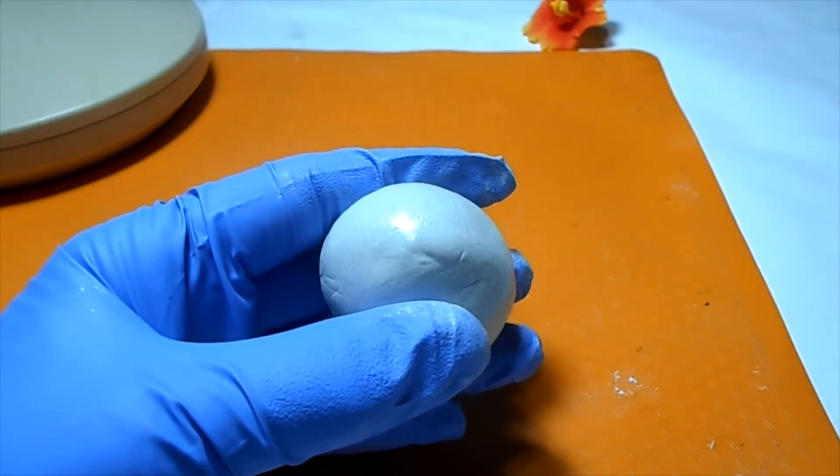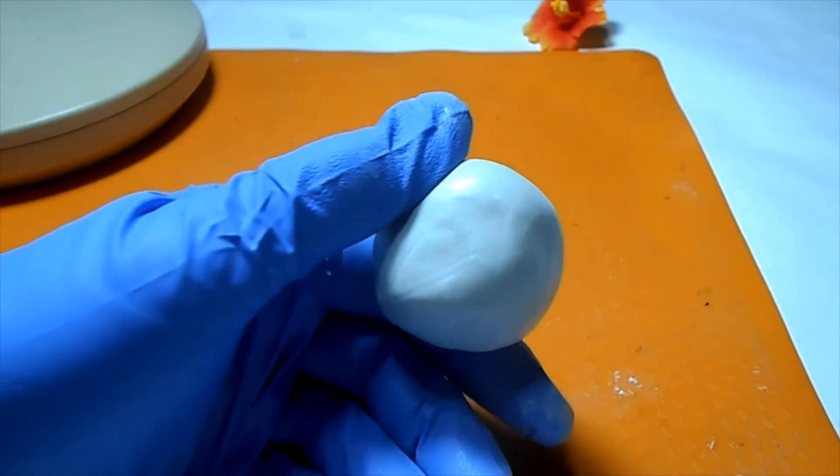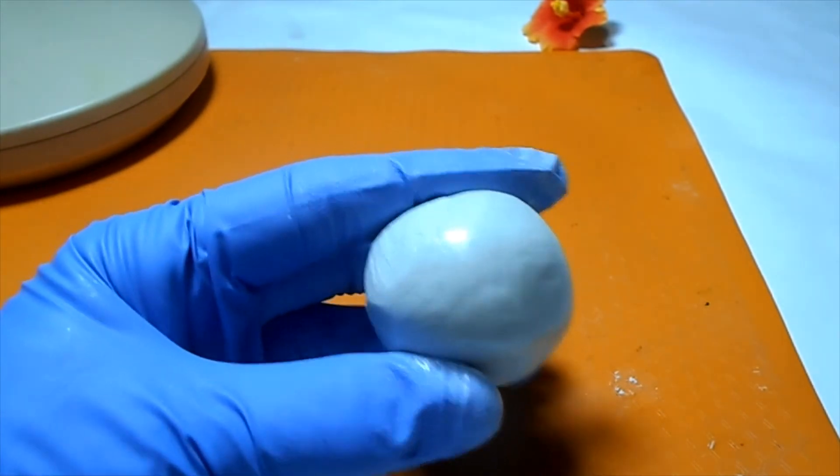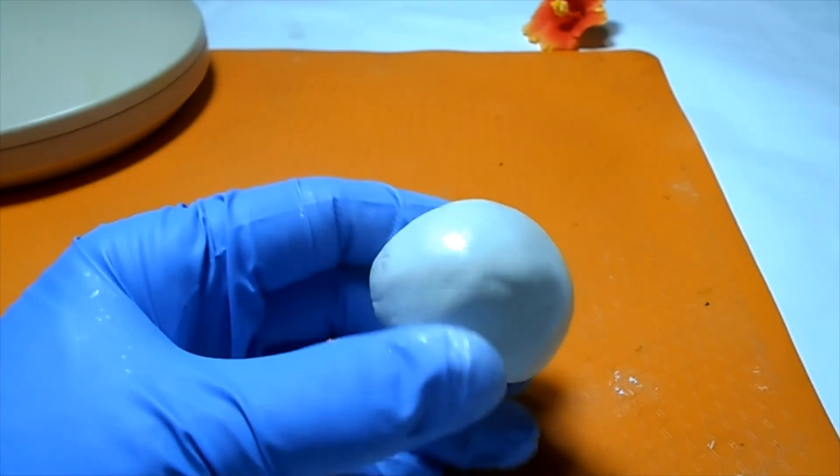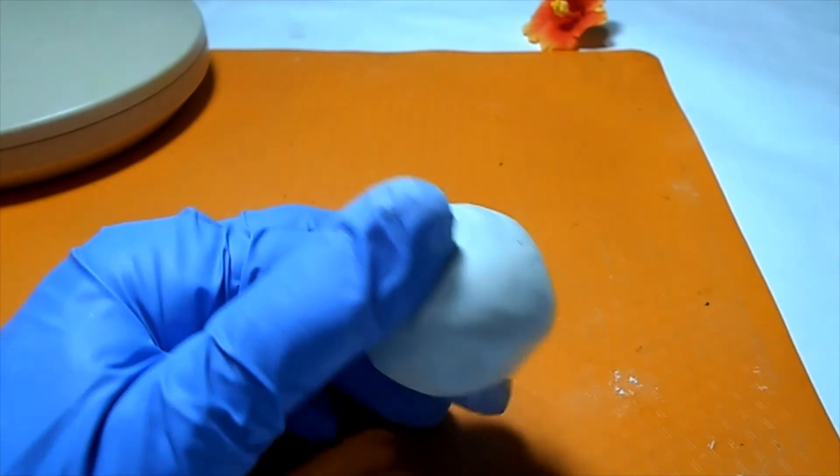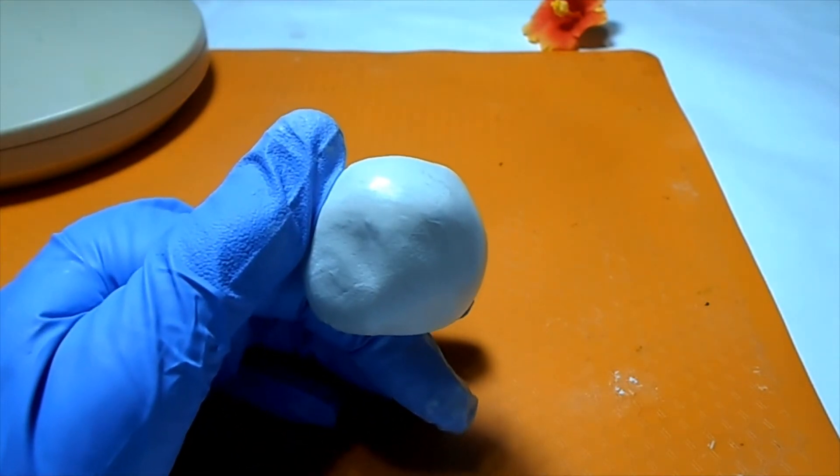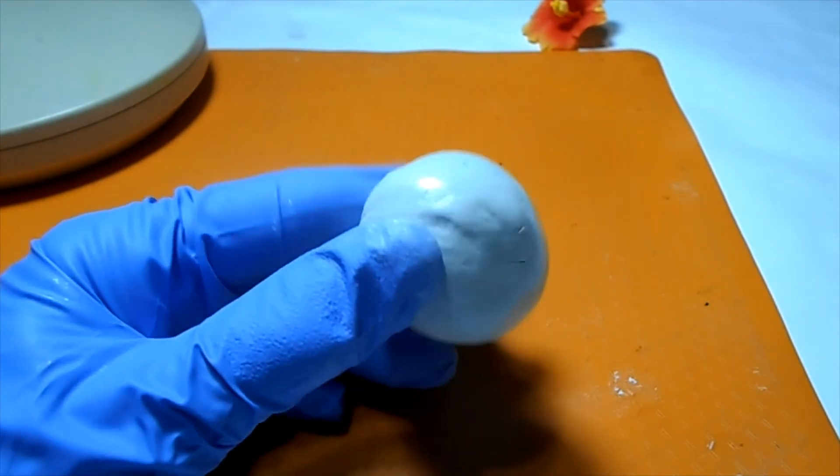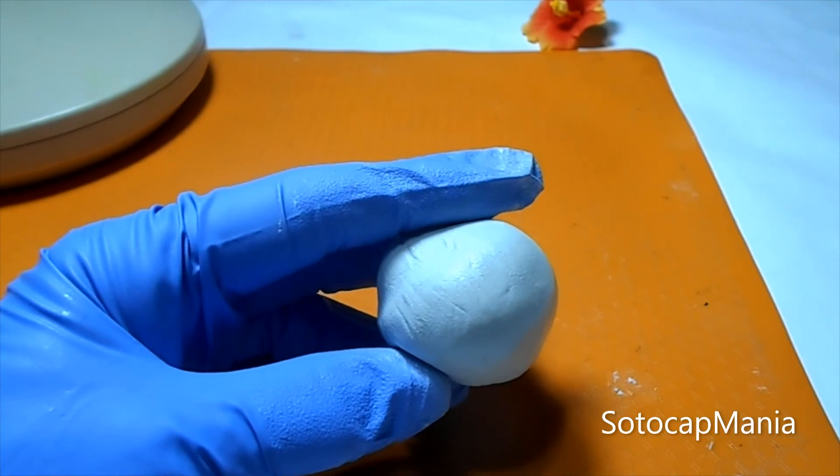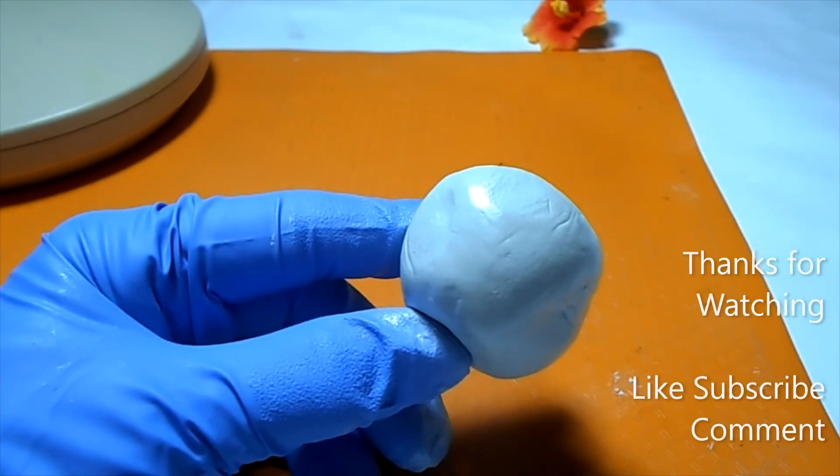So I've gone ahead and blended the epoxy clay together, part A and part B, made one solid color. I'll go ahead and fill the cavity of the mermaid mold and see how she comes out.